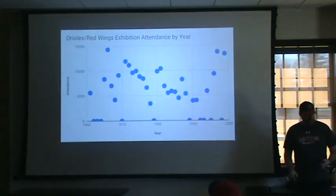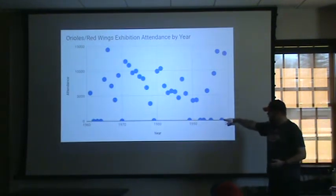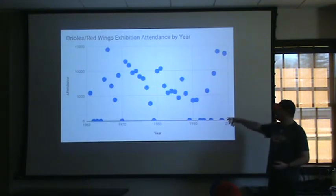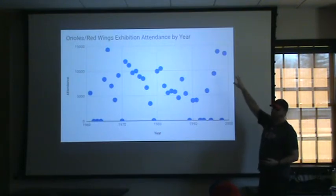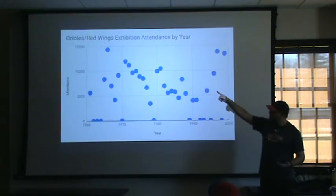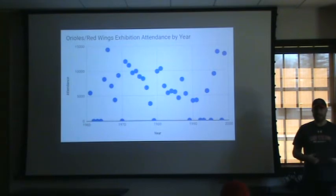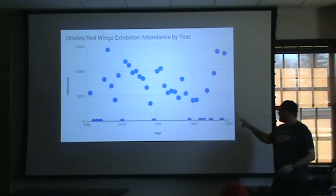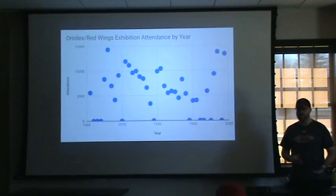Looking at attendance by year, the years on the bottom showing zero are years without an exhibition game. Most of the high-attended years were the last two held at Frontier Field, some of the biggest attendances in Frontier Field history. The 1966 game was one of the highest attendances in Silver Stadium history — a July day with good weather. A lot of the numbers around the 5,000-fan mark wound up being that low because of rain and cold weather.